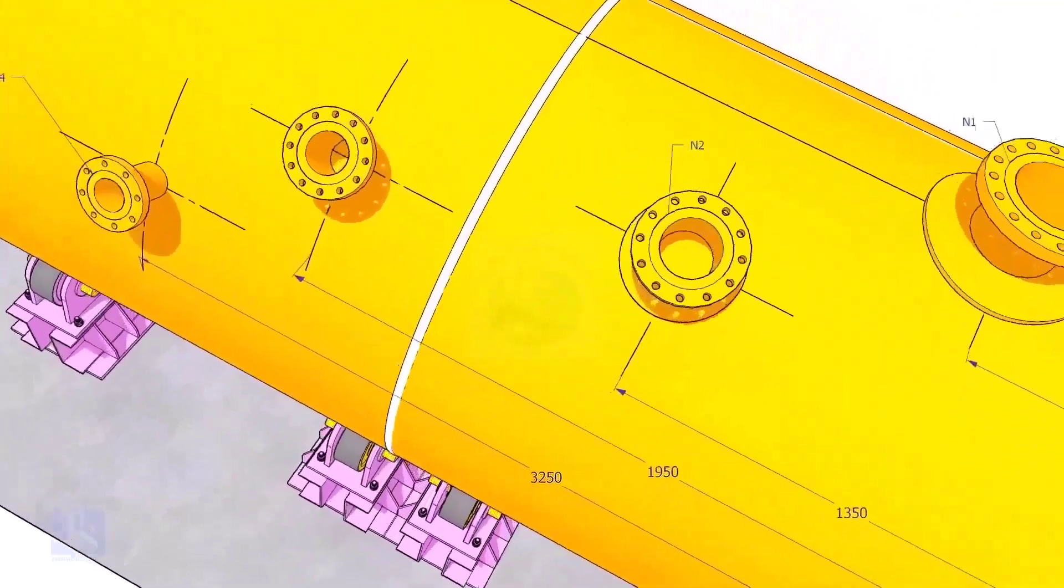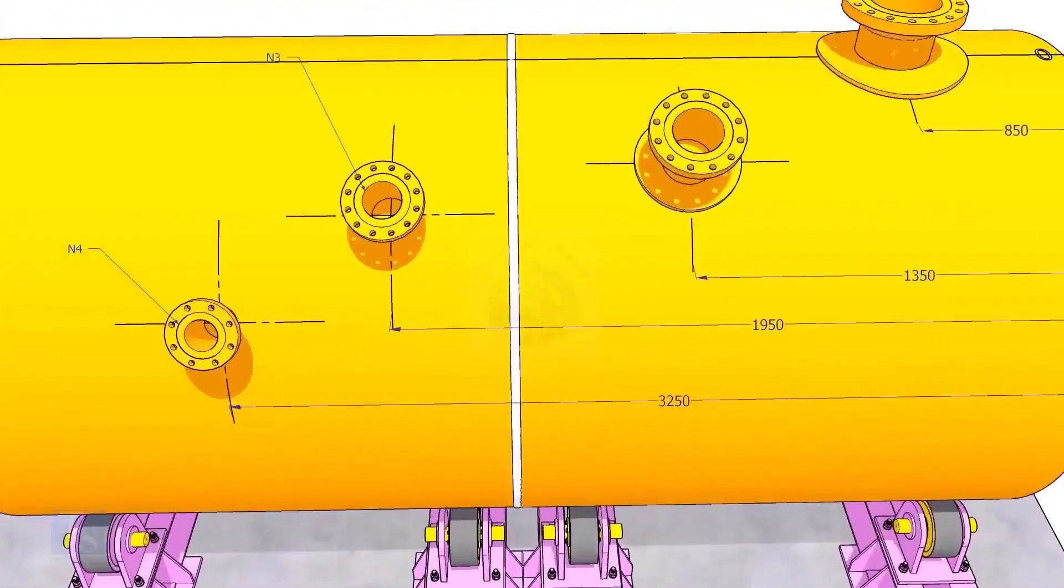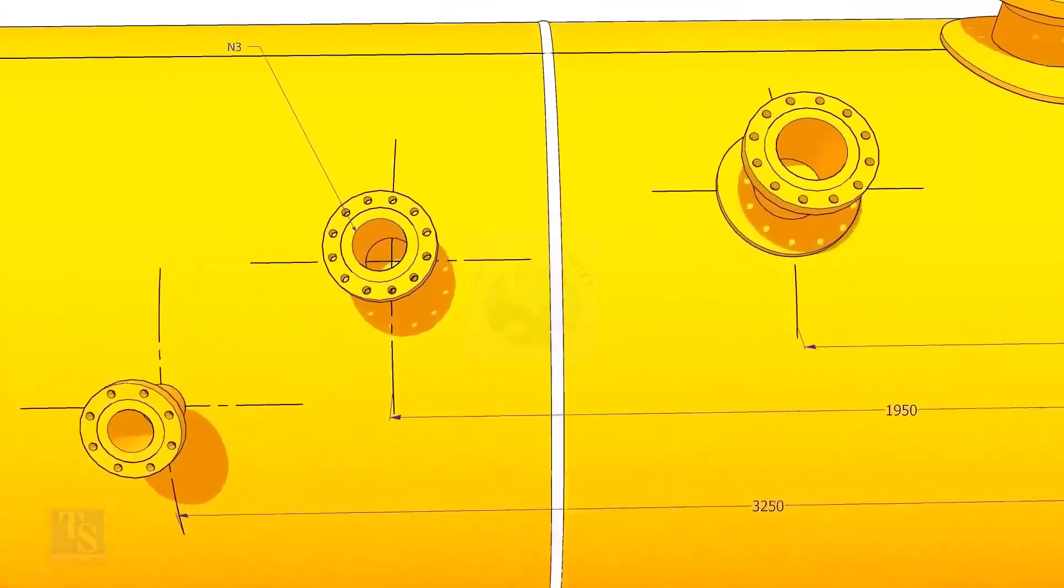Draw an arc of 1350 millimeters from the edge of the shell, intersecting this line. This point is the center of the nozzle N2.